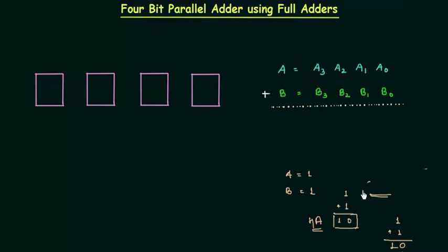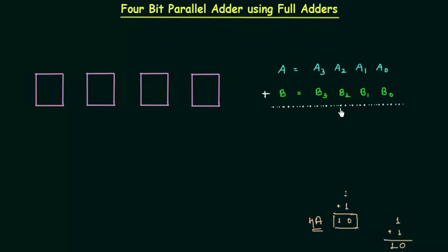We will add two numbers A and B, both having 4 bits. A is equal to A3, A2, A1, A0 — these are the 4 bits. A3 is the MSB and A0 is the LSB, and B is also a 4-bit number. So we are going to add this 4-bit number by using full adders. Let's see how to do this.